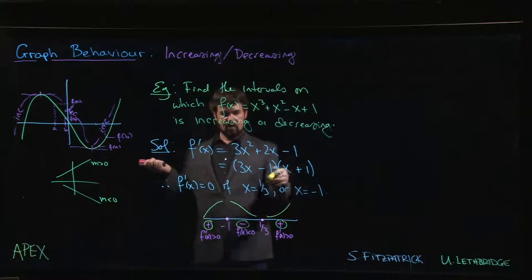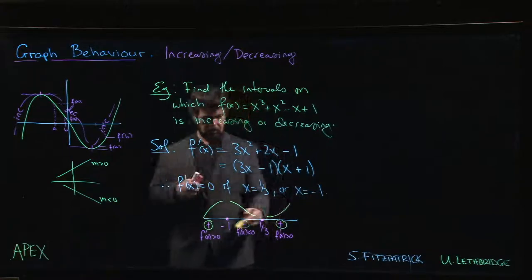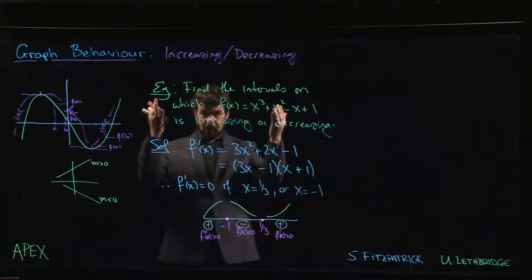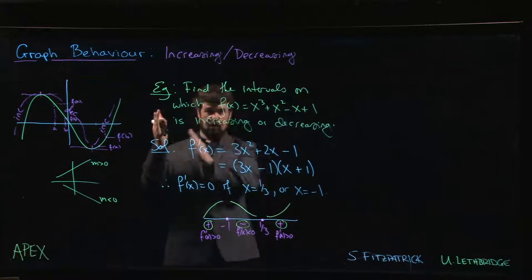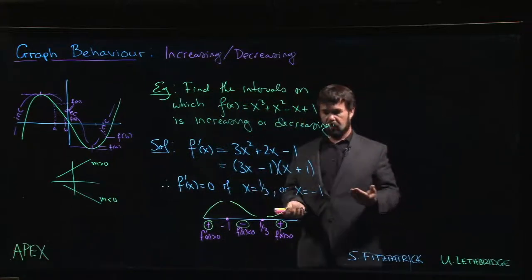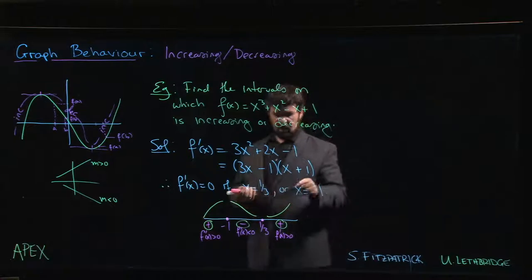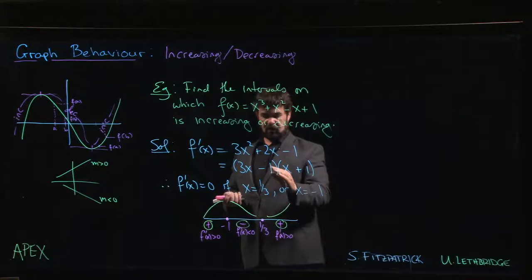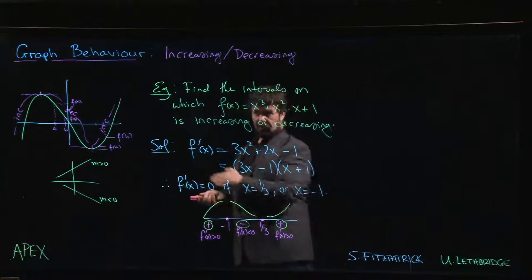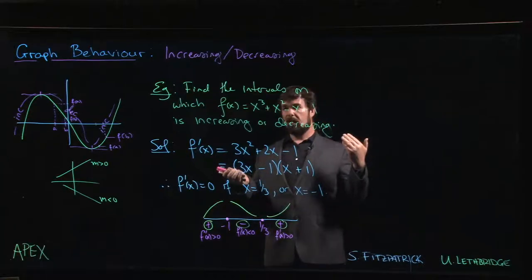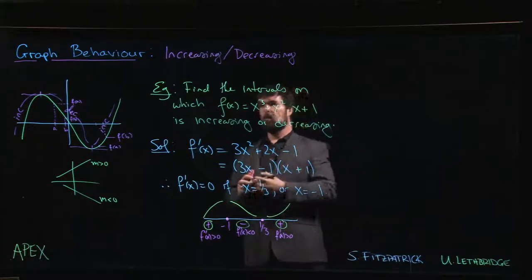That's the idea. Once you get some practice with these sign diagrams, you can fill these out really quickly. You probably don't even end up bothering with test values. You might just say, hey, it's a quadratic opening up, so I know it's got to go plus, minus, plus, because that's what it looks like whenever you have a quadratic opening up with two roots. Some people get good at just saying, well, at each of these zeros I have a sign change, and you get good at deciding whether or not you have a sign change at each zero. You just fill out the signs going across. People can do these pretty fast.